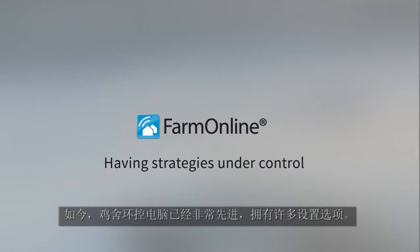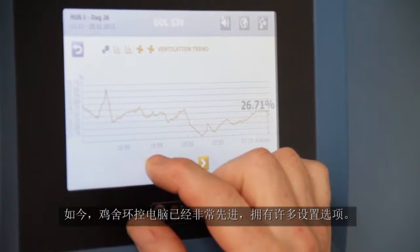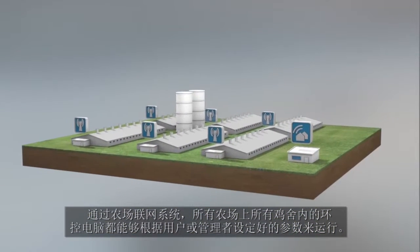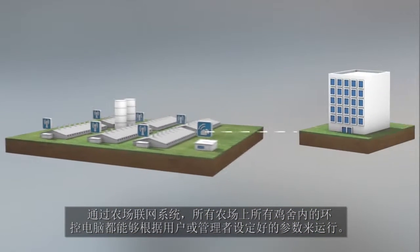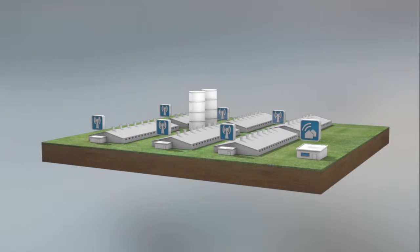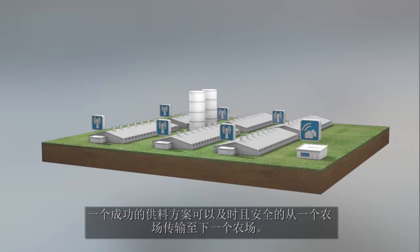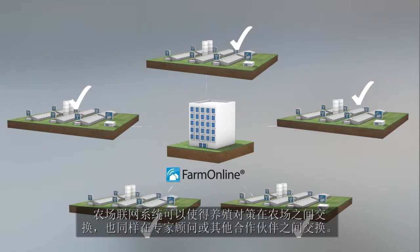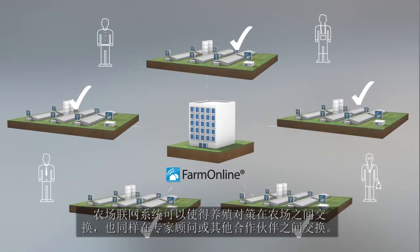Today, house computers are highly advanced with numerous setting options. Owing to Farm Online, all house computers on all the farms operate based on the settings and strategies determined by the farm manager or owner. A successful feed strategy can be transmitted quickly and safely from one farm to the next. Farm Online allows strategies to be exchanged between individual farms as well as with consultants and other partners.